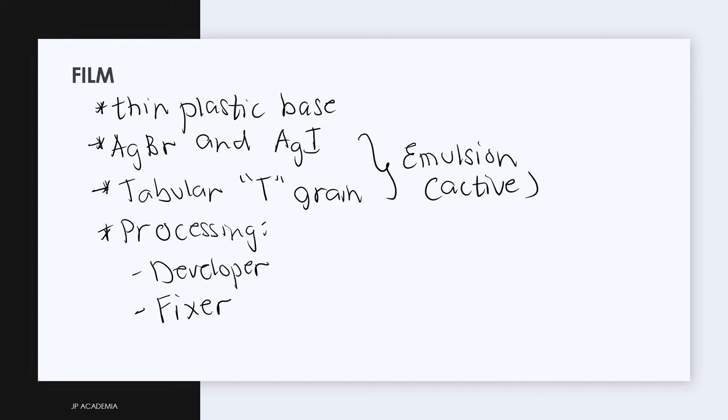In the film development, we will use a reducing agent developer and an oxidizing solution which is a fixer. This is how you form the image in your radiographic film.